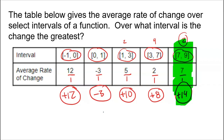The biggest problem is that students look at the table and treat the values as output values rather than average rates of change. They see 12, negative 3, 5, 2, and 7 and try to compute changes between those numbers — like from 12 to negative 3, I went down 15. But you can't do that because these are average rates of change, not output values, and we don't have consecutive equal-length intervals. Instead, for each interval you multiply the average rate of change by the width of the interval to get the total change. The last interval with average 7 over 2 units gives a total change of 14 — the biggest of all.